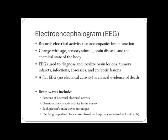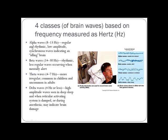An EEG (electroencephalogram) changes with age and brain disease and is used to detect tumors or brain lesions. There are four main wave types: alpha waves (awake and relaxed), beta waves (awake and alert), theta waves (common in children, not in adults), and delta waves (deep sleep).